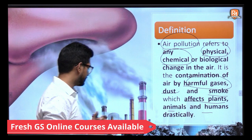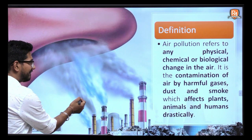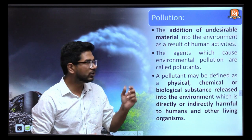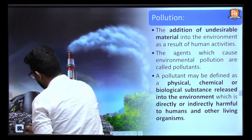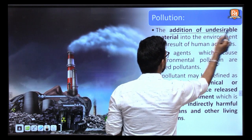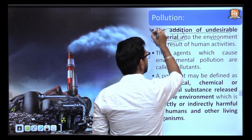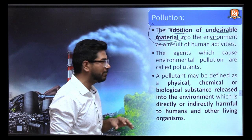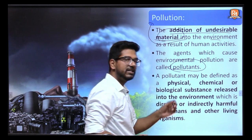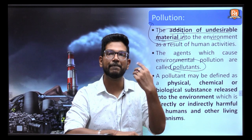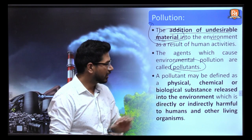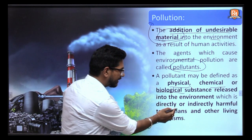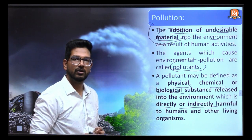Let's see what a pollutant is. Addition of any undesirable material into the environment is known as pollution. But the agent which causes this kind of problem is known as a pollutant — the agent which causes harmful impact on the environment. A pollutant can be a physical, chemical, or biological substance which can be directly or indirectly harmful for human health.